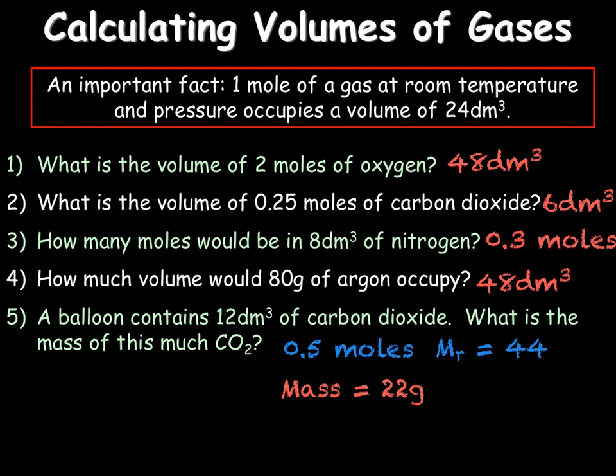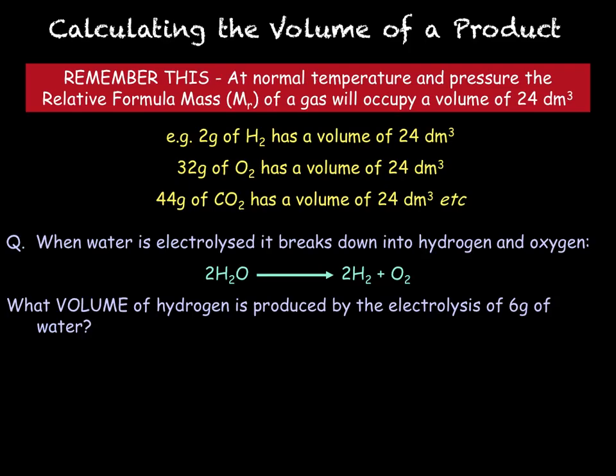We will now look at how to calculate the volume of a product in a reaction. In order to calculate the volume of a product we need to work out the ratios between the reactants and the products. So 2 grams of H2 has a volume of 24 dm cubed, 32 grams of O2 has a volume of 24 dm cubed, and 44 grams of CO2 has a volume of 24 dm cubed.